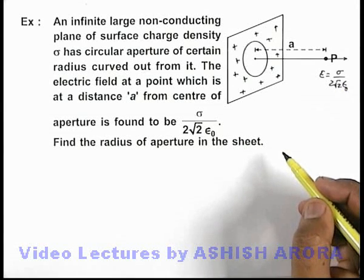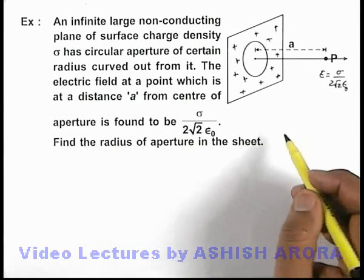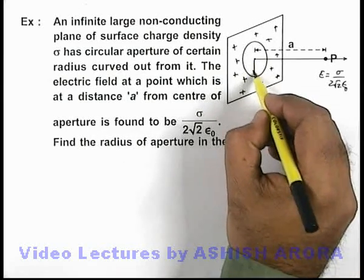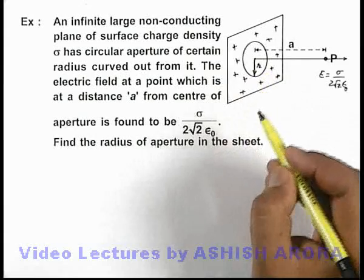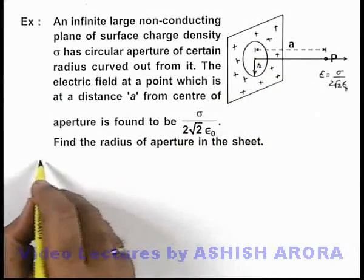Now, in this situation, if we wish to find out the radius of this aperture which is carved out, we can say if this is r, then we can simply state in this solution.